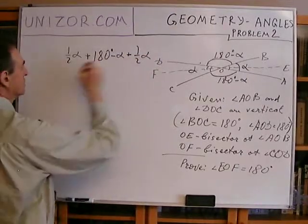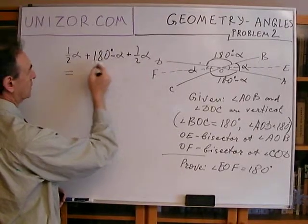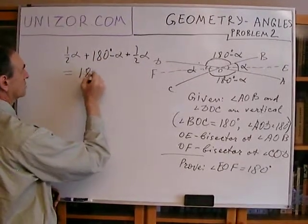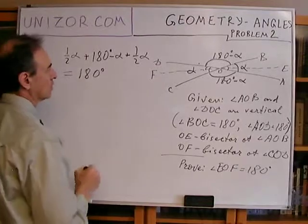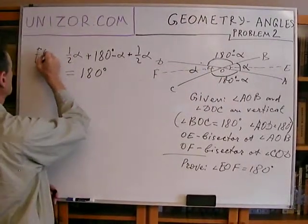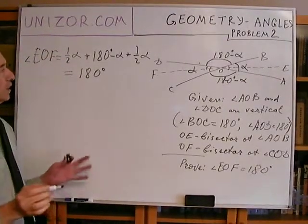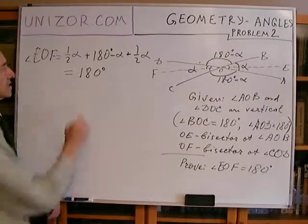And as you see, this is equal to one half alpha minus alpha plus one half alpha, only 180 is remaining. So, that's what will be EOF. This is EOF, angle equal. Well, that's it. That's the whole proof.